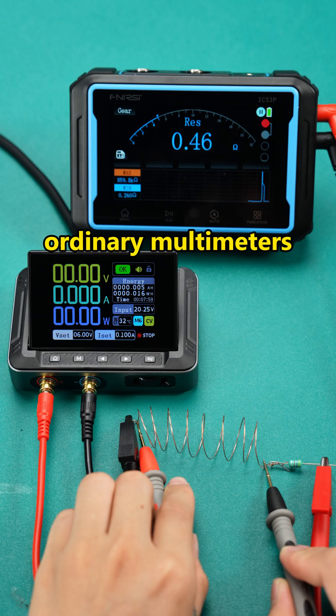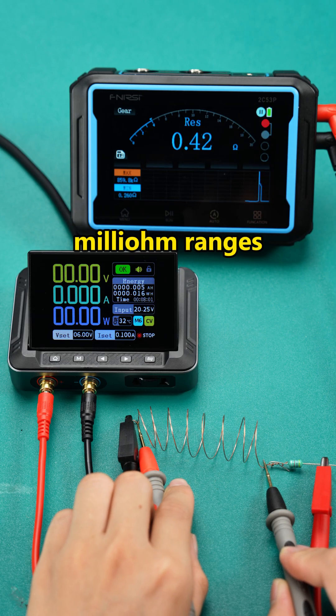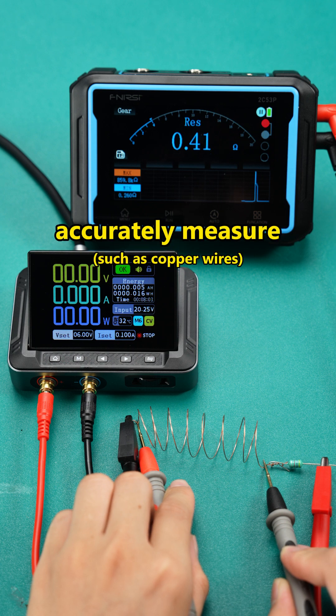How to measure copper wire resistance? Since ordinary multimeters do not have milli-ohm ranges, they cannot accurately measure low resistance items.